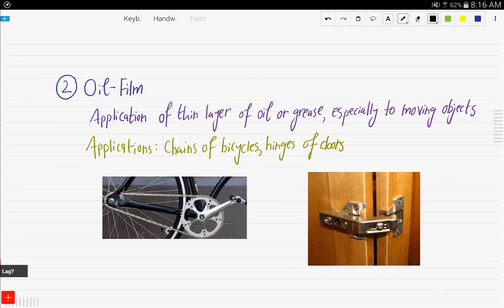The second rust prevention method is oil film. It is the application of a thin layer of oil or grease, especially to moving objects. Some applications include chains of bicycles and hinges of doors.